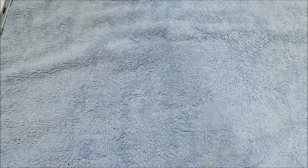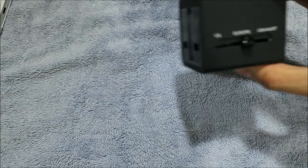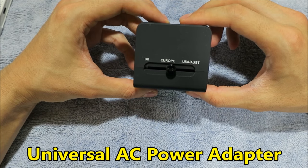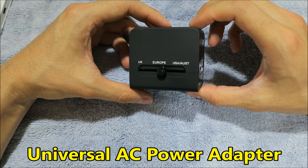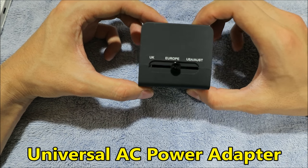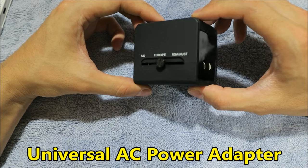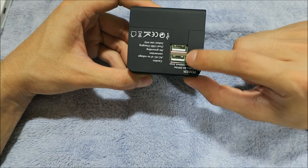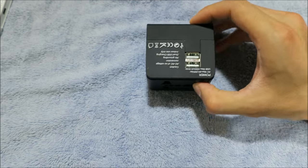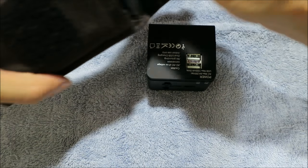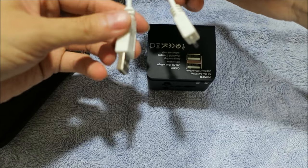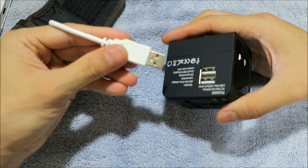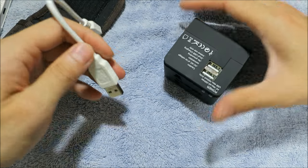Moving on, travel gadget number two: a universal wall socket wall charger. I have used this through all my travels. I got this probably 2014 or 2015. I was using one that didn't have USB. This one has two USB ports. I could just plug that in and charge my battery or phone or camera or whatever, anything USB compatible. That's why it's so handy.